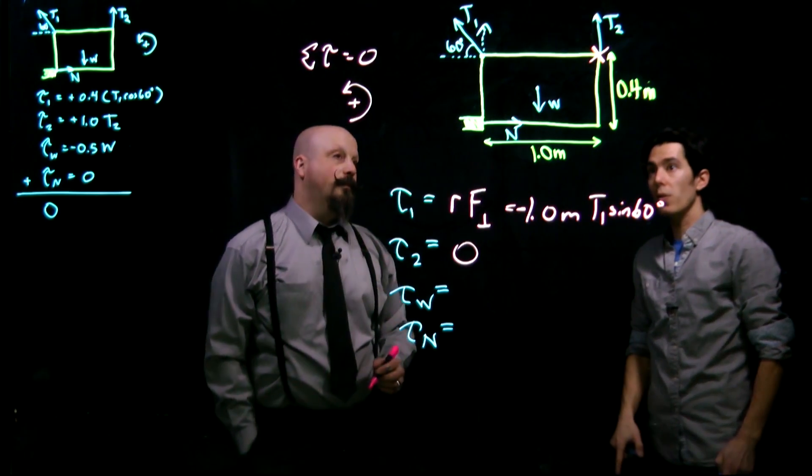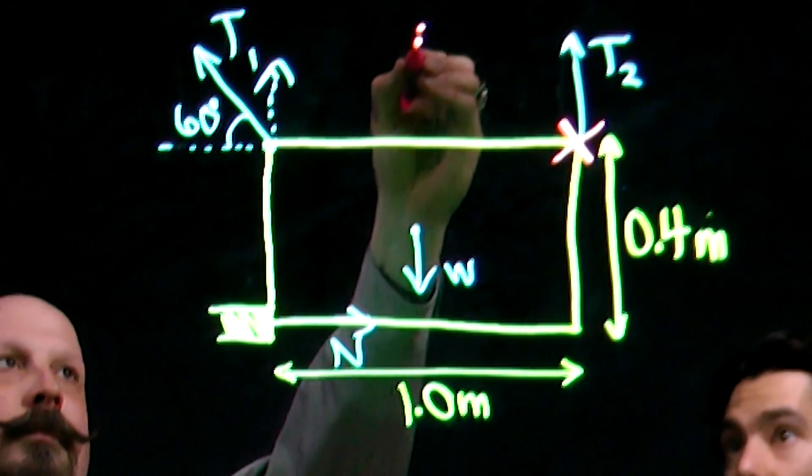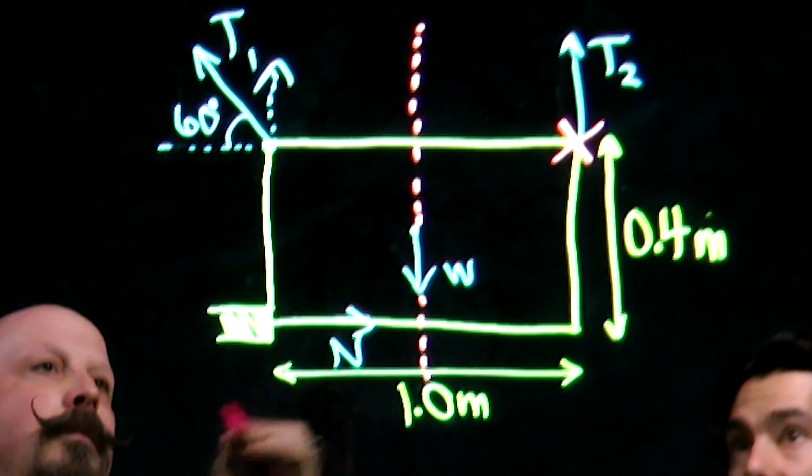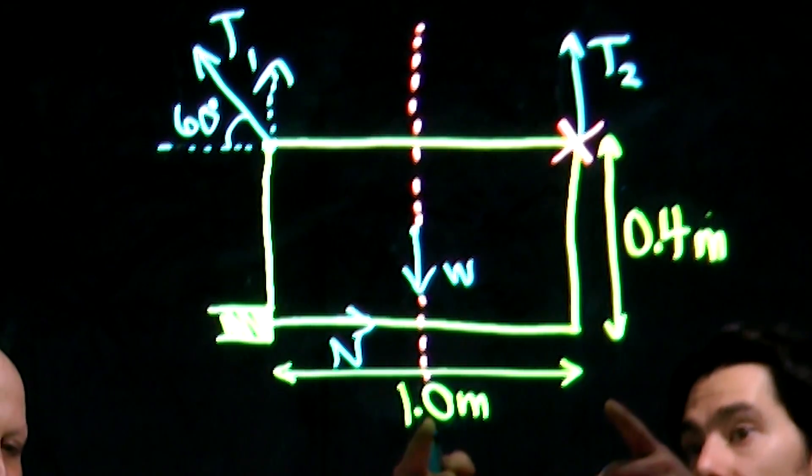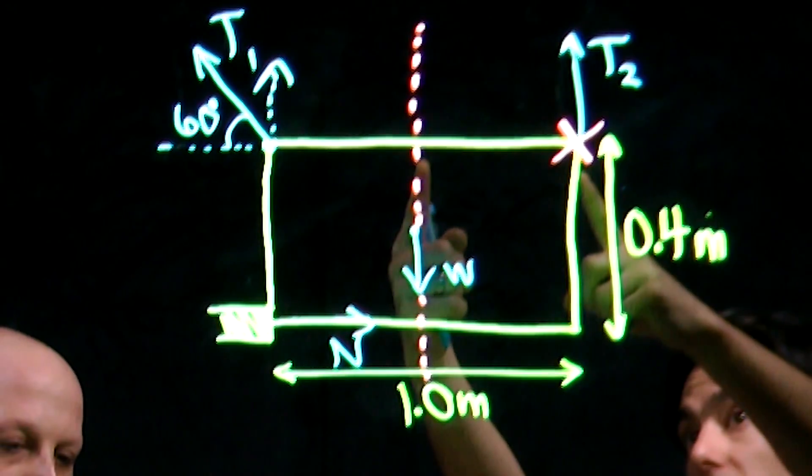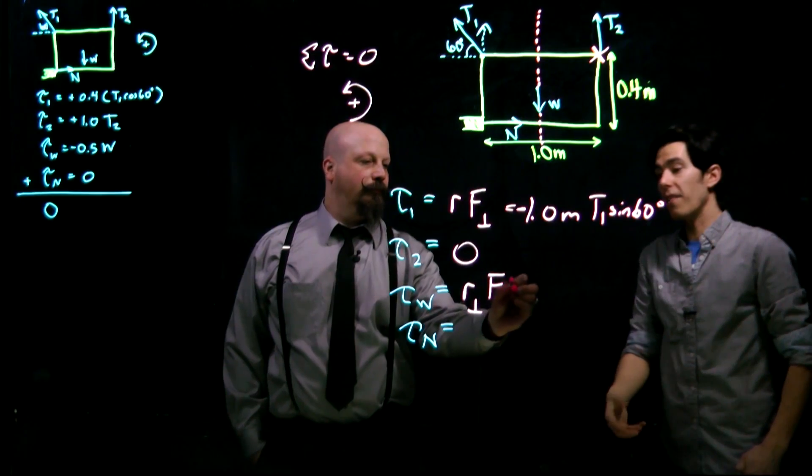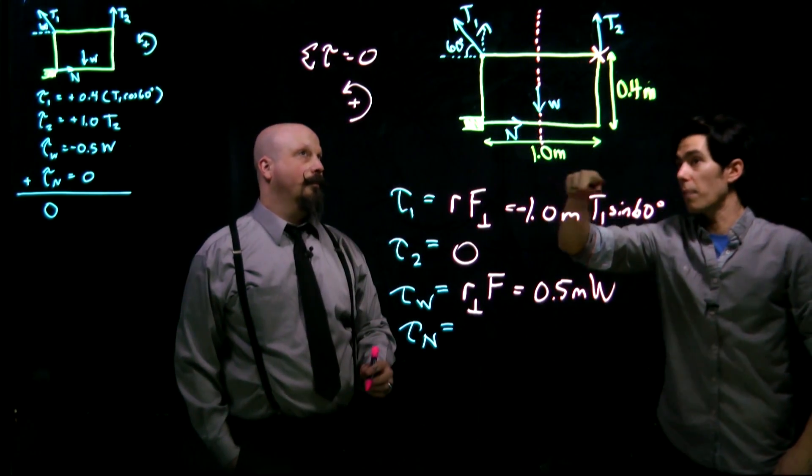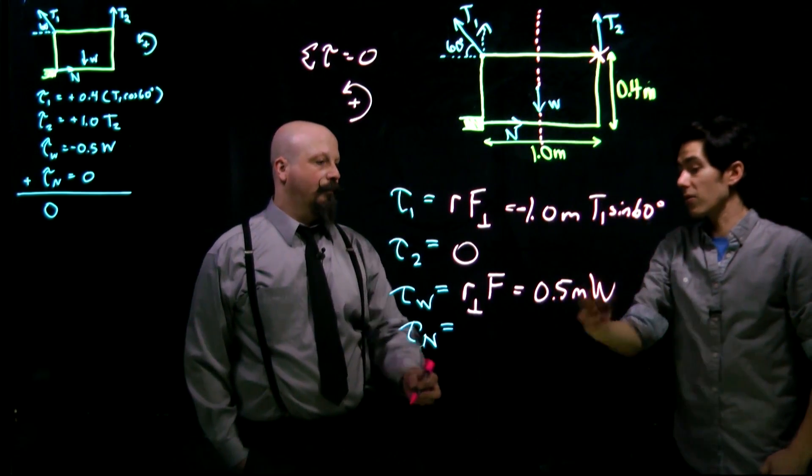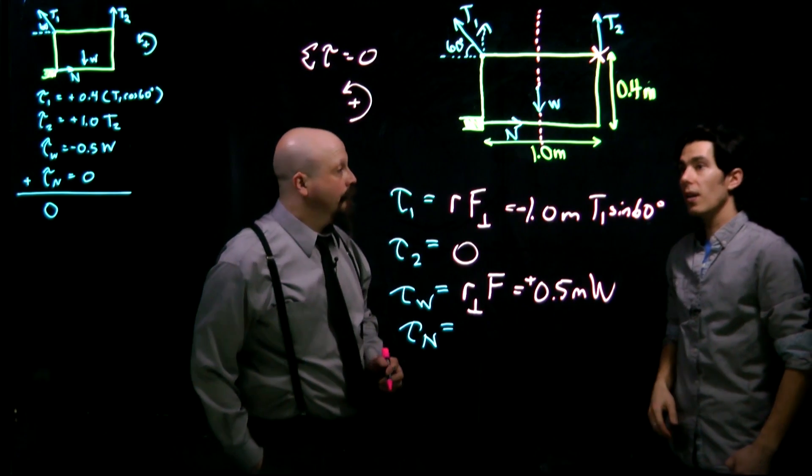The torque due to the weight now, we're going to use the second method. So we're going to draw our line right over top of the force and connect that back to the pivot point. So now we're a distance of half a meter away from the pivot point. So we're going to write 0.5 meters times W. And that's going to try to rotate the sign about the pivot point in the counterclockwise sense, so that's again a positive torque.